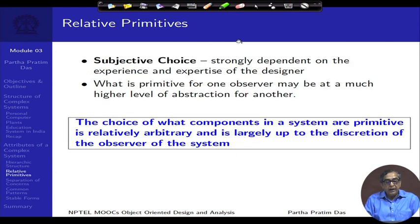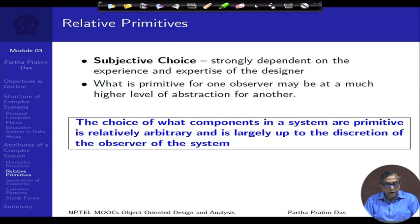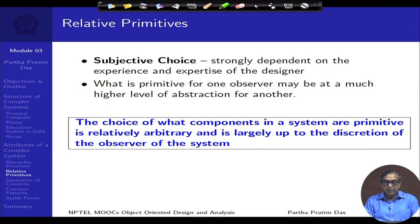Next is relative primitives. If we keep on decomposing the system in the hierarchic manner, then there is somewhere we will have to stop, and that stopping point is called the relative primitive or the primitive. It is relative because there cannot be a unique definition of what is a primitive. It is a matter of perception of the observer or the designer as to deciding what is a primitive, and what could be a primitive for me may not be a primitive for someone else.